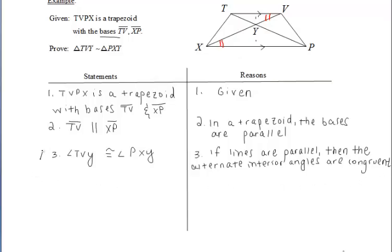angle TVY and angle PXY are congruent because they're alternate interior angles. That already gives us one pair of congruent angles within the triangles.